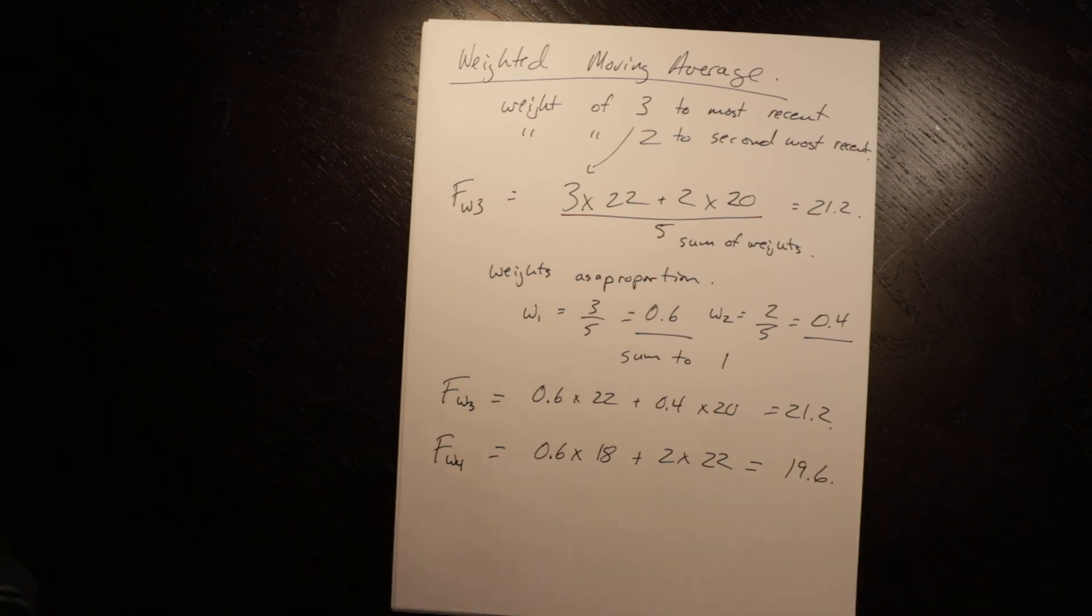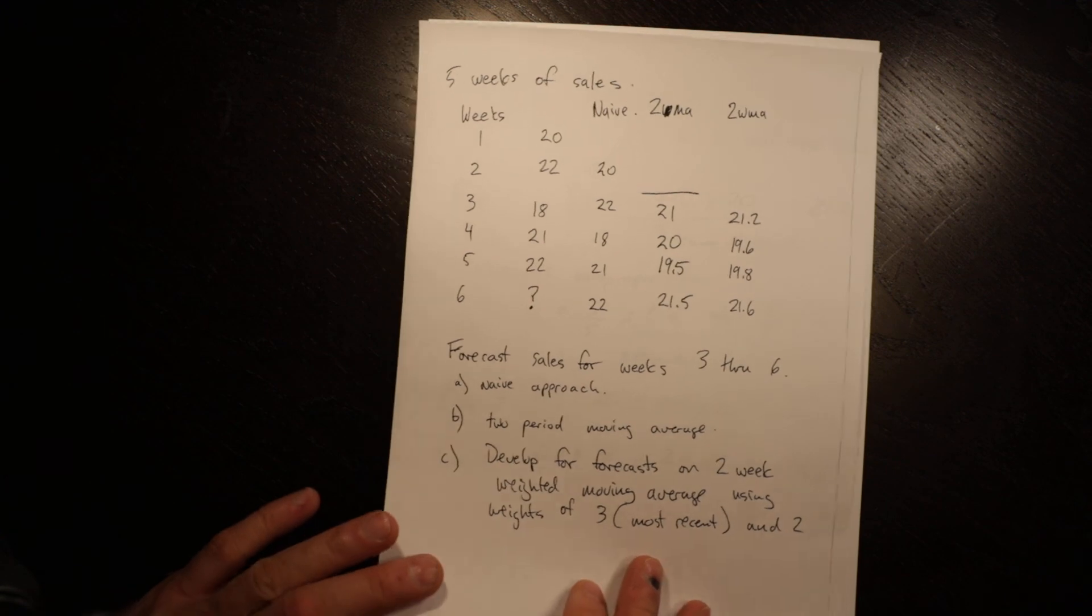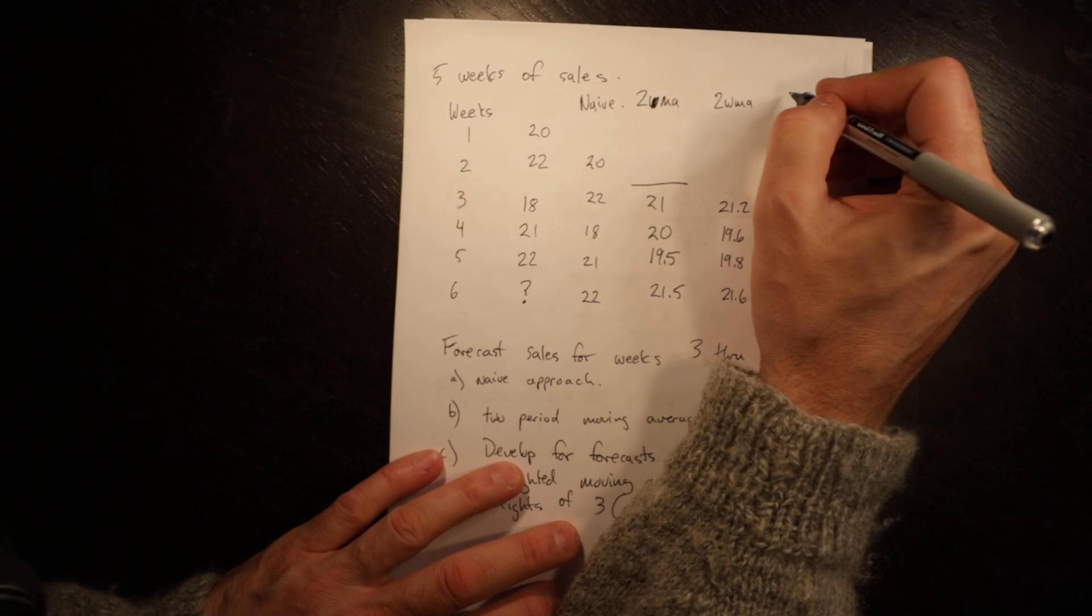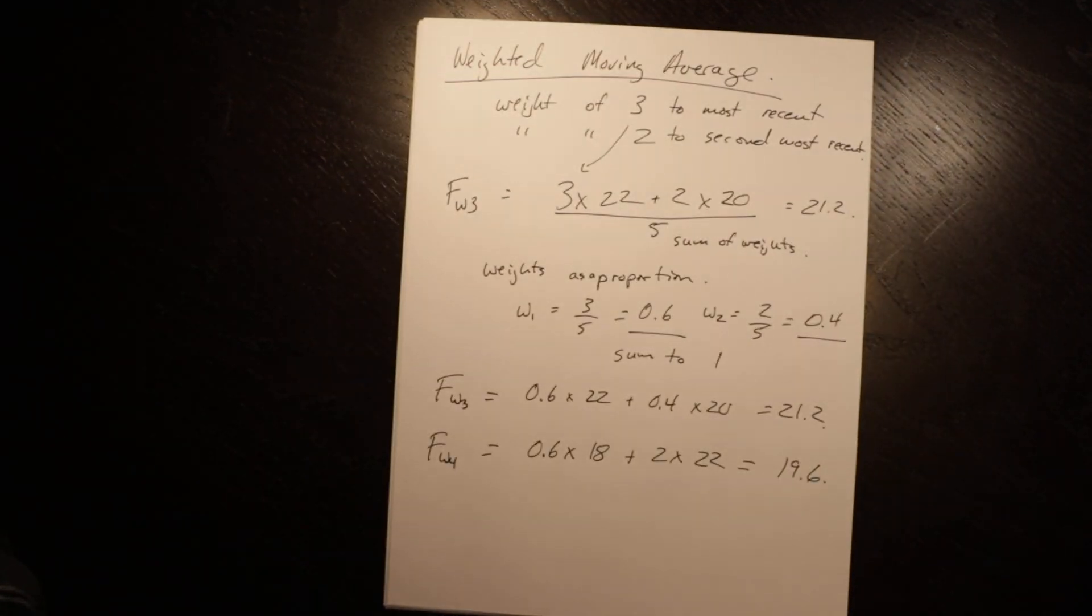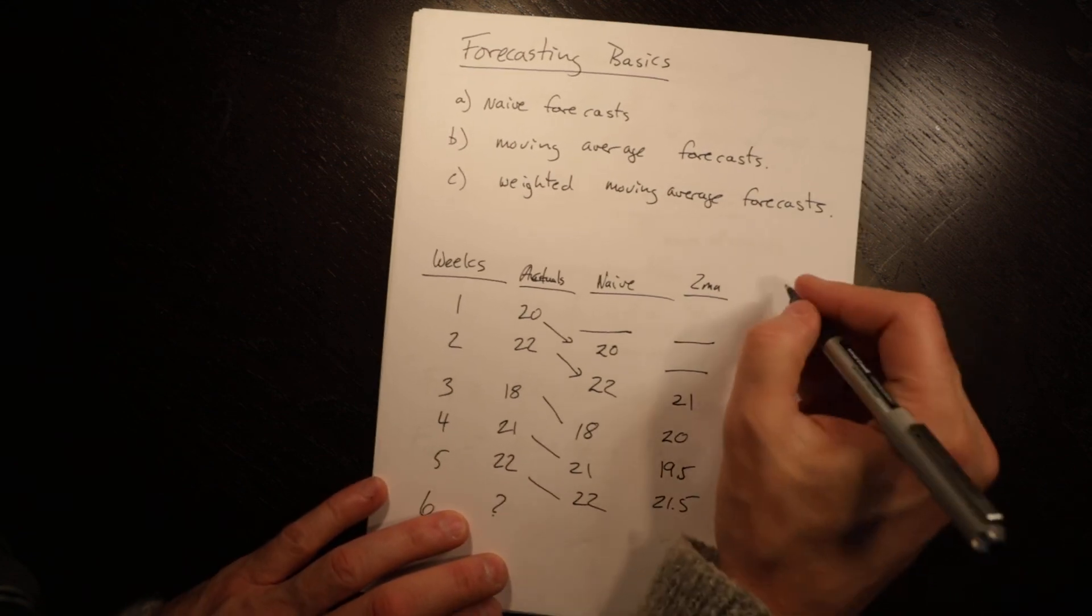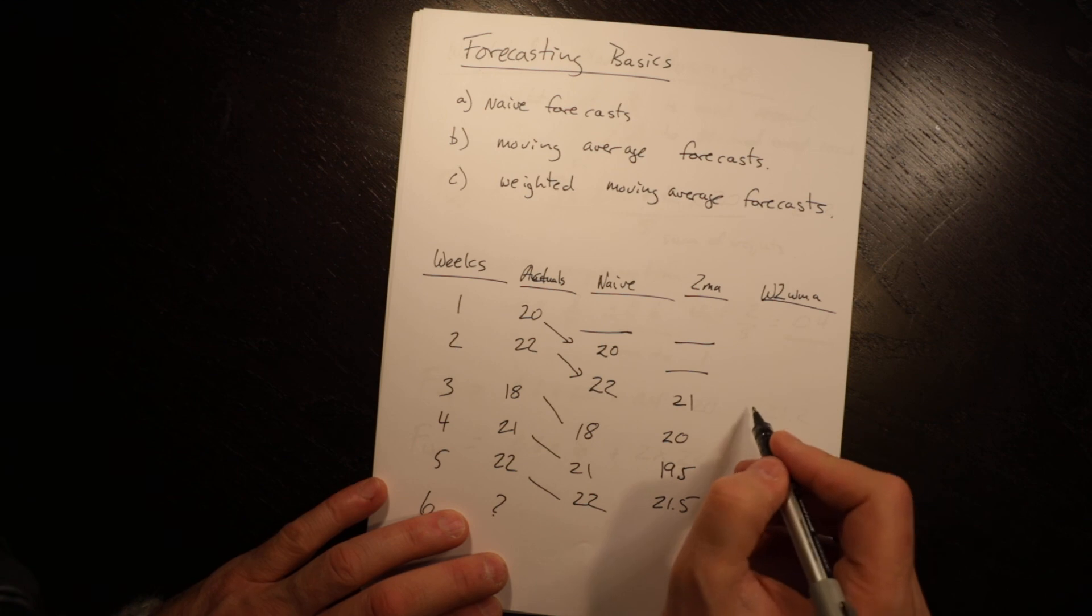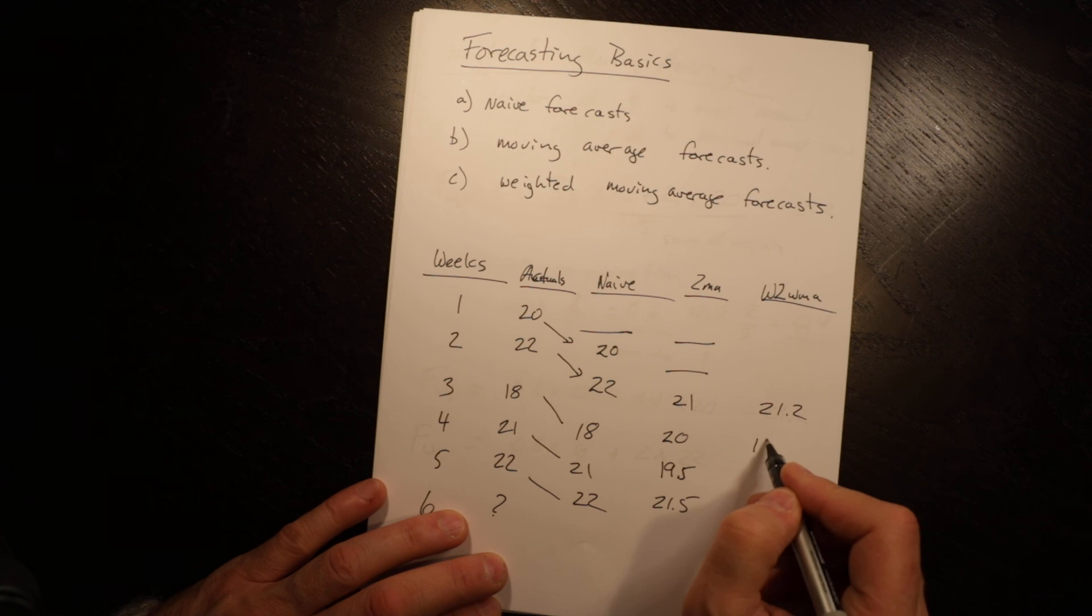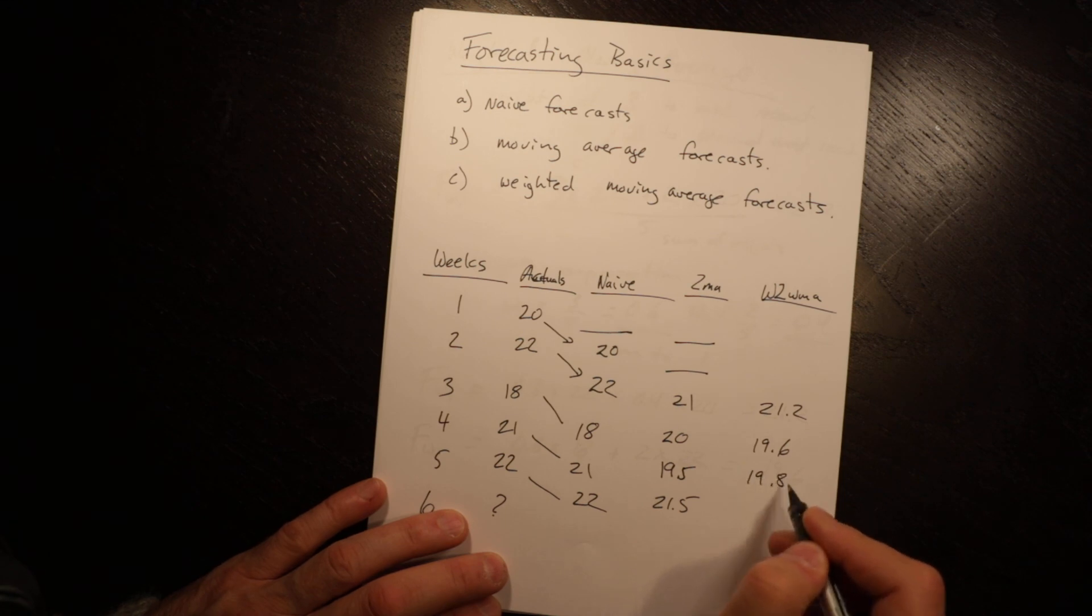So if I go back and put that into my original data here. Oops, wrong one. That's my notes. Put that into my data here. Weighted two week moving average. I'd start at week three. I have 21.2. I have 19.6. I have 19.8 and 21.6.